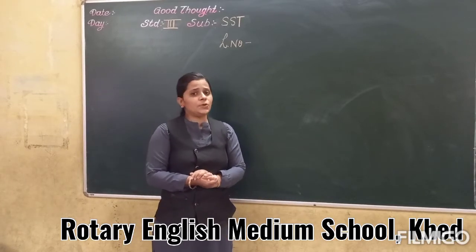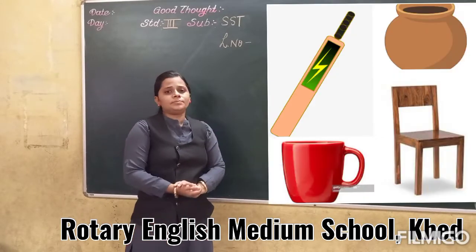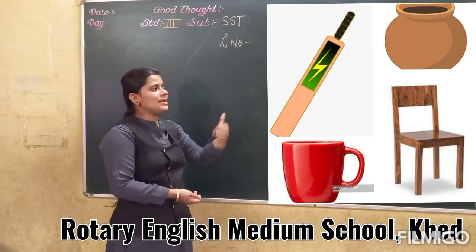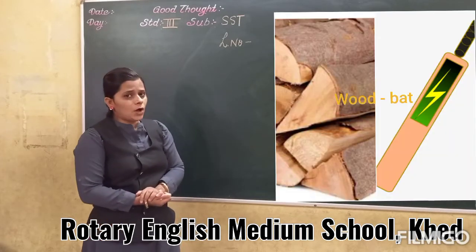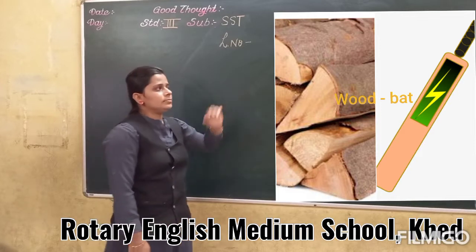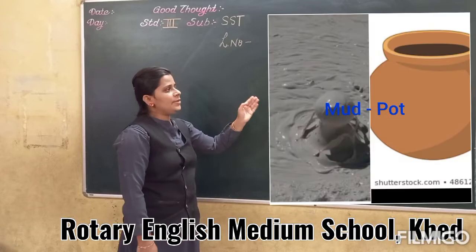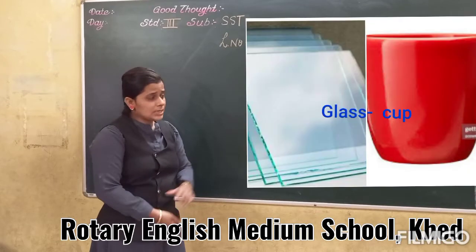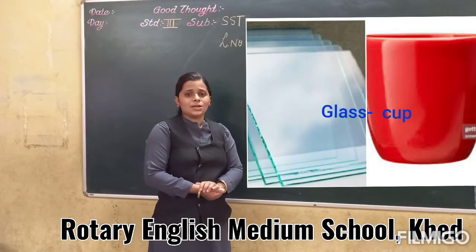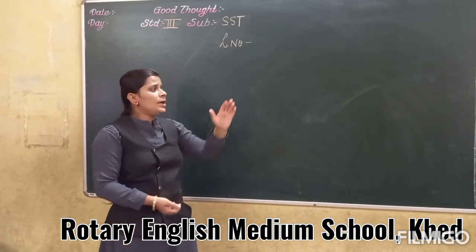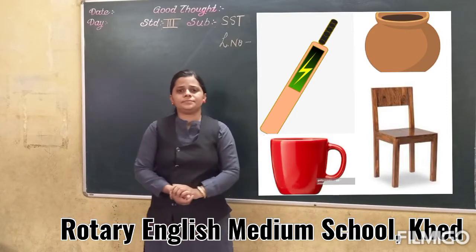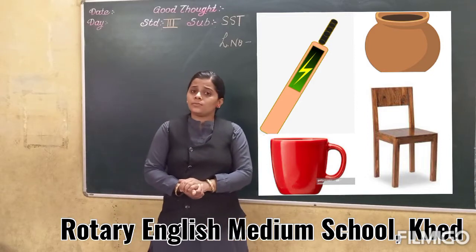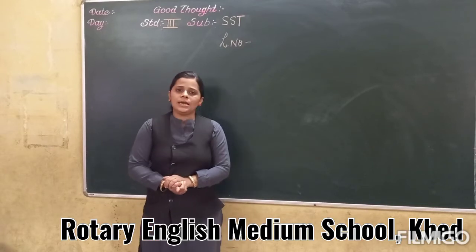Now my dear children, can you tell me what material they are made from? Just take the first example — bat. What material is this bat made from? It is made from wood. Pot — it is made from mud. Cup — it is made from glass. So my dear children, where do we find all this? We get all this material from our environment.